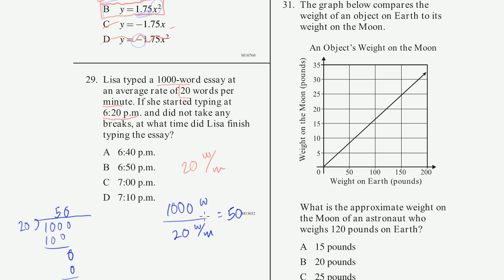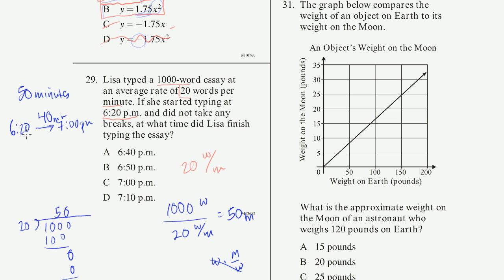The units work out: words divided by words per minute gives you minutes. So it'll take 50 minutes. She starts at 6:20 PM. At 7:00 PM she's worked 40 minutes, and she needs 10 more minutes — so she finishes at 7:10 PM. The answer is D.